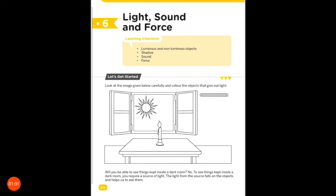Look at the image given below carefully and color the objects that give out light. You have an image here. You have to observe the image carefully, and whatever objects are shown that give out light, you have to color them.